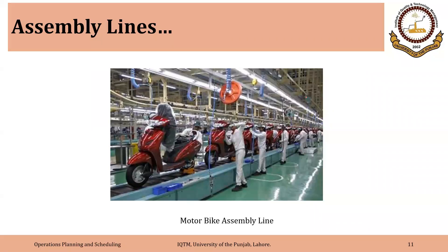Motorbike assembly line is also an example. Each stage where a specific worker performs a certain task is generally called a workstation. There could be one or more tasks performed at each workstation — sometimes called work elements. We can combine tasks or work elements to form workstations. There is at least one task performed at each workstation.